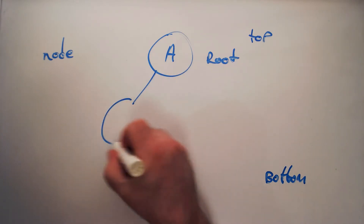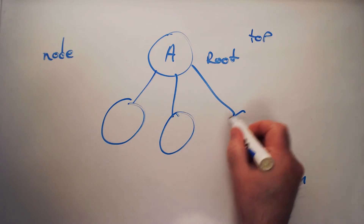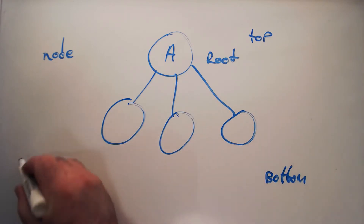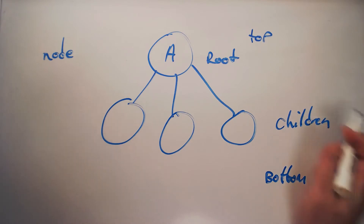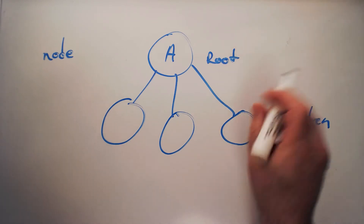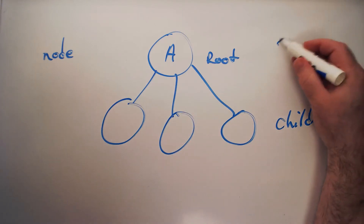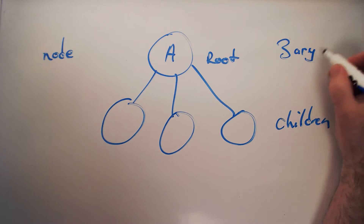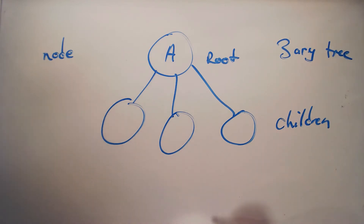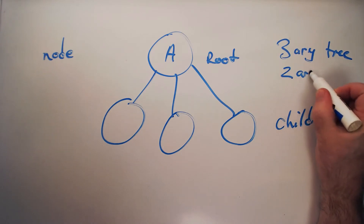In a tree, because it's hierarchical, you can build a set of children nodes. This is the root node here. This would be what we call a three-ary tree. Now in this video, we're talking about a binary, which would be a two-ary tree.